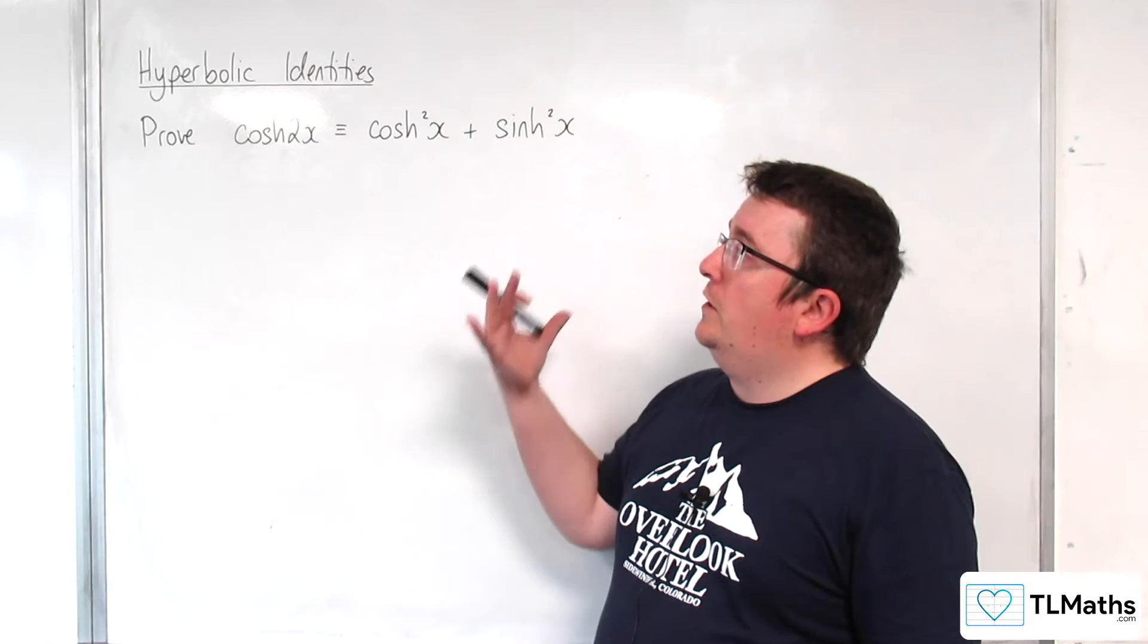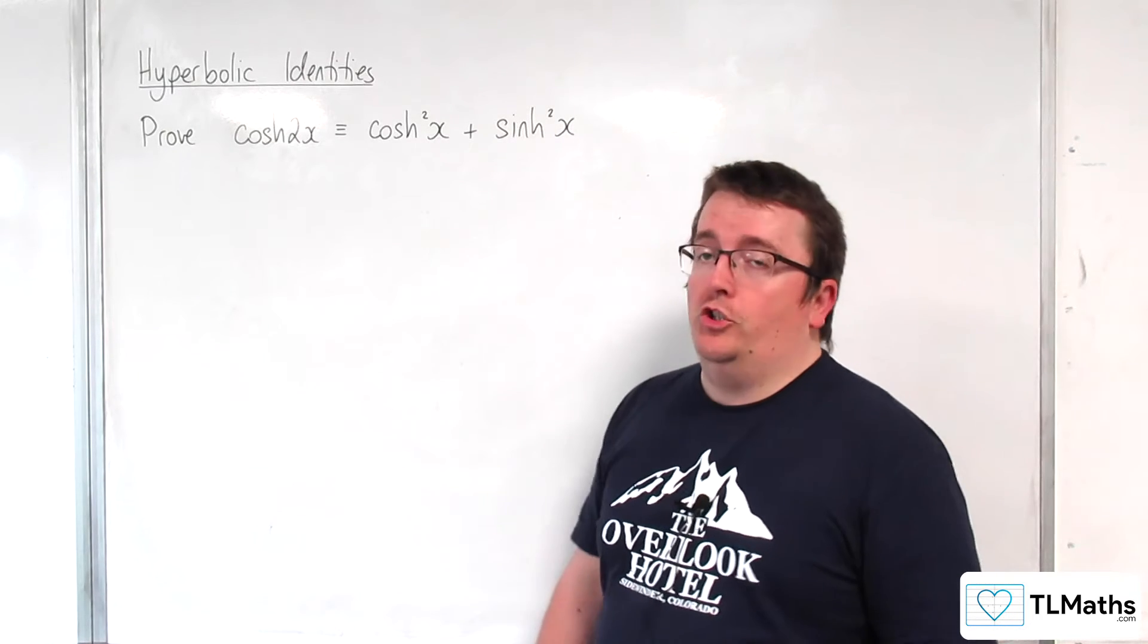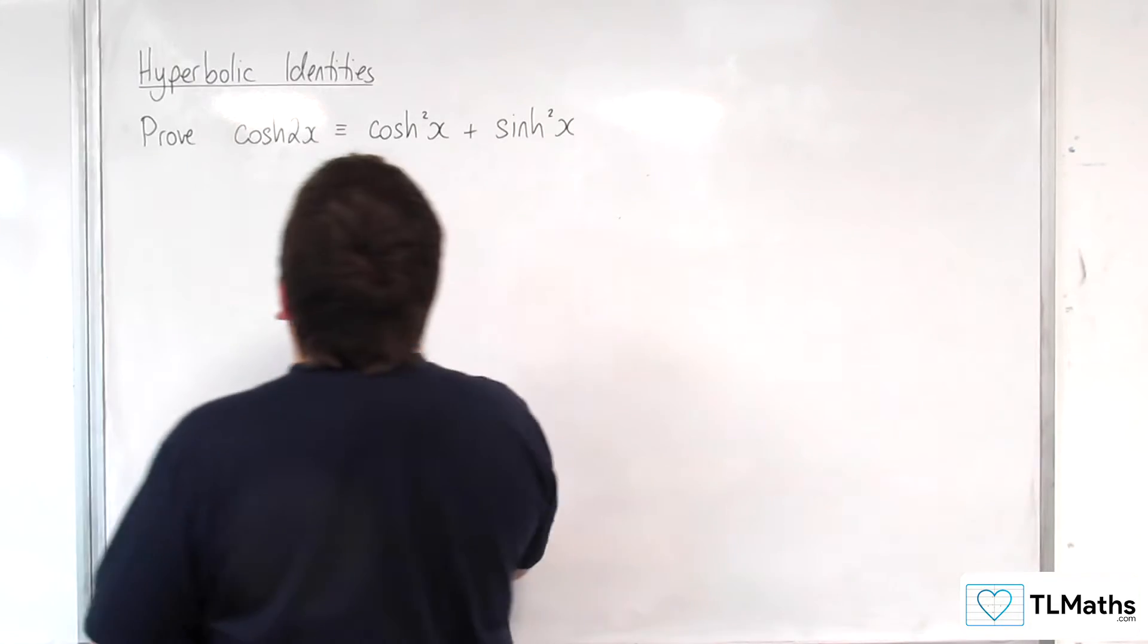In this video we're going to prove that cosh of 2x is equivalent to cosh squared x plus sinh squared x. So we're going to start with the right hand side.